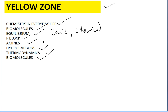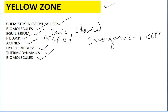For P-block elements, cover all the reactions and preparations from NCERT. One important thing: in organic chemistry, you have to read from the NCERT book line by line for NEET, because each and every line is important. Amines, hydrocarbons, thermodynamics, and biomolecules — these are the main topics in the yellow zone. Cover the red zone first, then the yellow zone.